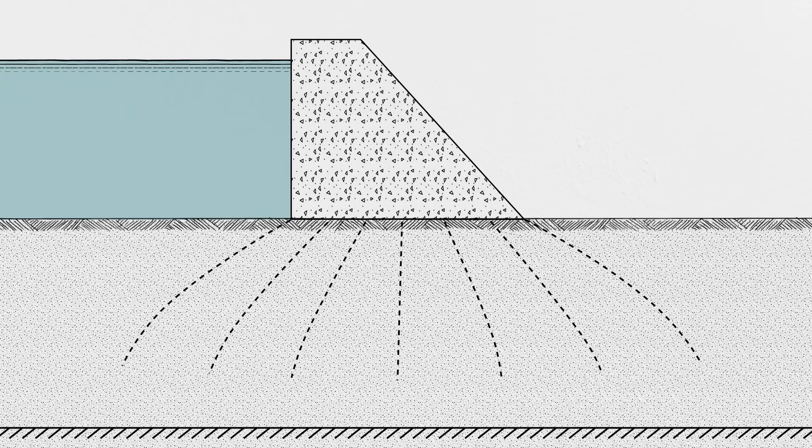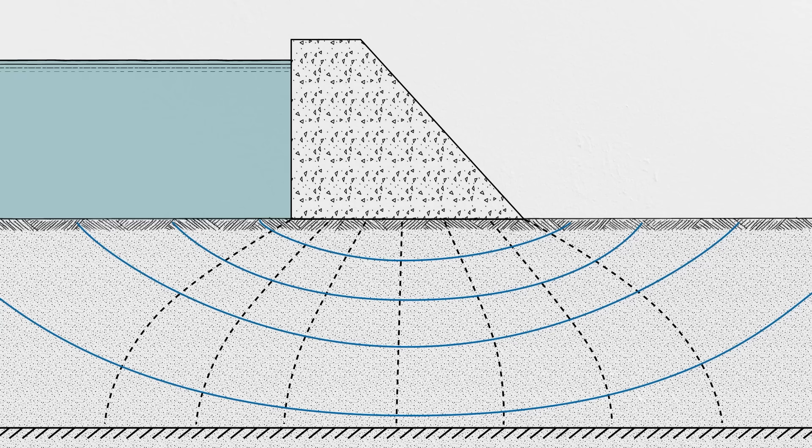But engineers do have to predict it. After all, we can't build a dam, measure the actual uplift force, and add weight if necessary. It's got to work the first time. One way to characterize groundwater flow around structures is the flow net. This is a graphical tool used by engineers to estimate the volume and pressure of seepage in the subsurface.